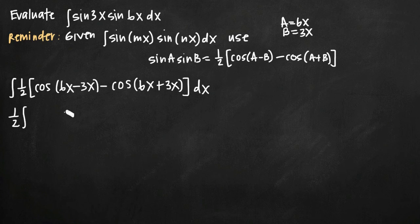We'll pull the one half out in front because it's a constant coefficient, and what we'll be left with is cosine of 3x minus cosine of 9x dx. Remember, before we had the product of two sine functions which at first glance seemed like it would be difficult to simplify. Now we have the difference of two cosine functions which we can evaluate separately.